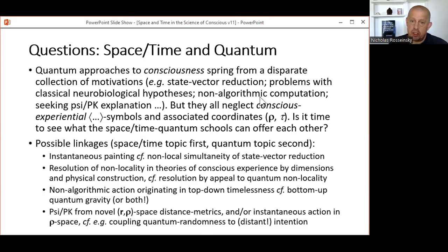And finishing up with my third group of questions, which concern the relationship between space-time approaches and quantum approaches to consciousness. As two sub-schools, quantum approaches to consciousness spring from a disparate collection of motivations—for example, state vector reduction, problems with classical neurobiological hypotheses, non-algorithmic computation, or seeking explanations for psi or psychokinesis. But as far as I can see, all the quantum schools neglect conscious experiential angle bracket symbols and their associated rho, tau, space-time coordinates.